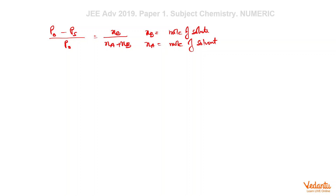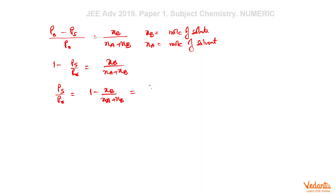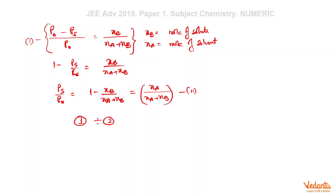Rearranging: 1 minus (PS upon P0) equals Nb upon (Na plus Nb), which means PS upon P0 equals Na divided by (Na plus Nb). Dividing equation 1 by equation 2, we arrive at the cleaner form: (P0 minus PS) divided by PS equals Nb upon Na.